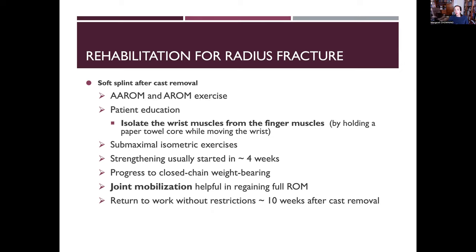Joint mobilization is very helpful but requires confirmation that all bones have healed on x-ray. Grade 1 and grade 2 mobilizations can be used early to treat pain, but grade 3 and 4 need clearance from the PT and physician. Complications of radial fractures include malunion, nonunion, nerve compression, and CRPS — particularly median nerve compression if a fracture fragment displaces anteriorly.